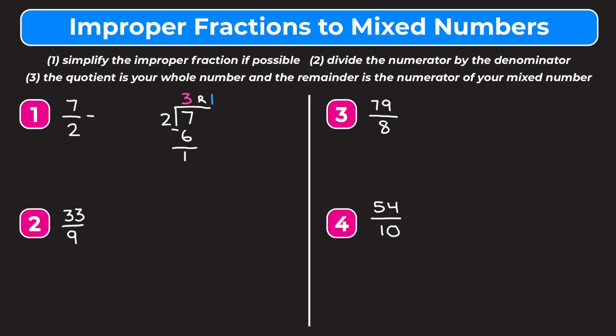We have a remainder of one. Our quotient of three becomes the whole number part of our mixed number. The remainder of one becomes the numerator, and the denominator always stays as is, so it stays as two. We get that seven halves is the same as three and one half.